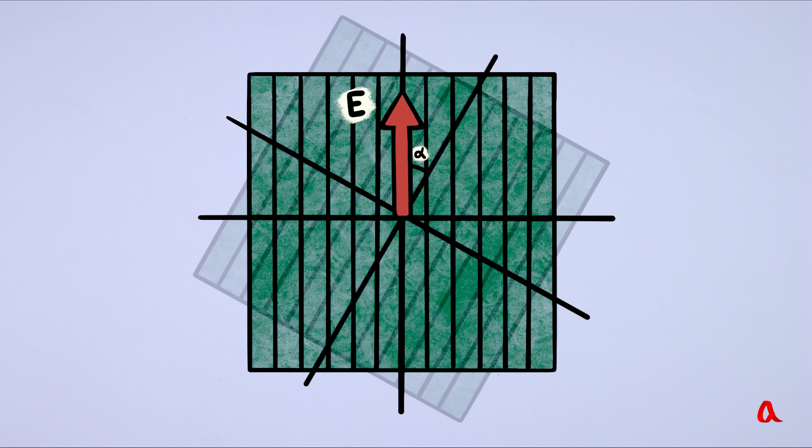This film is called an analyzer. It decomposes the electric field of the light wave into two components: a longitudinal one with an amplitude of E cos alpha, and a perpendicular one with an amplitude of E sin alpha.